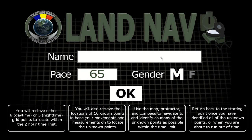On the Land Navigation Introduction screen, enter your name. Enter your 100 meter walking pace count if you know it. If you don't know it, leave it as the default 65, which is the average pace count for a 6 foot tall male. Select your gender and click OK.